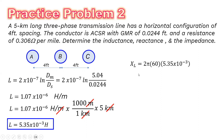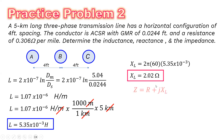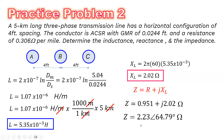The inductive reactance X_L = 2πfL = 2π × 60 × 5.35 × 10⁻³ = 2.02 ohms. Therefore, the impedance Z = 0.951 + j2.02 ohms in rectangular form, which converts to 2.23 ∠ 64.79° ohms in polar form.